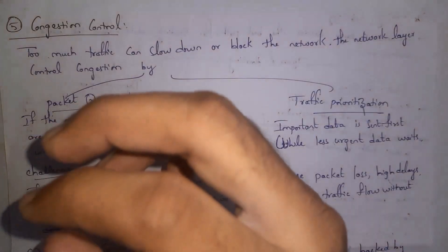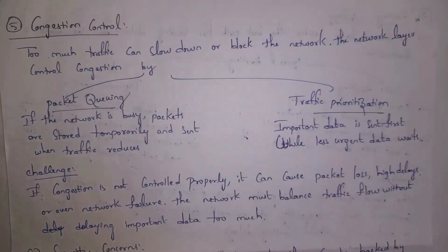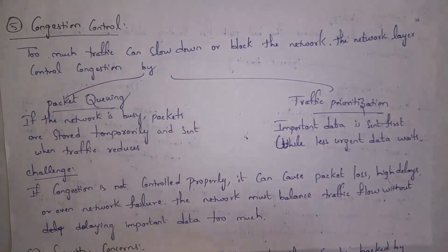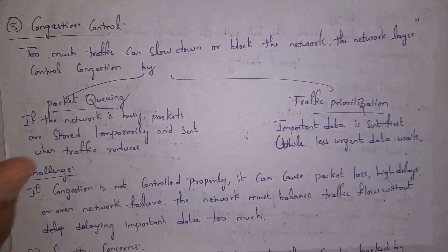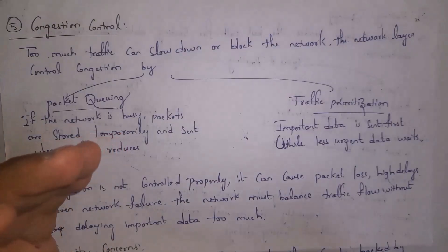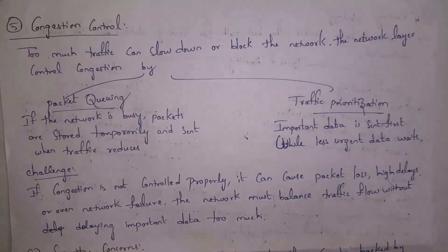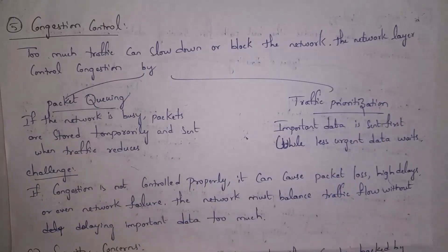The fifth challenge is congestion control. If multiple devices are sending data at the same time there will be too much traffic, causing data to be transferred very slowly or the network to block. Congestion control can be done using two methods: packet queuing and traffic prioritization. In packet queuing, when traffic is very high the router does not send data immediately — instead the router takes data from the sender, waits until traffic reduces, and only then transfers the data.